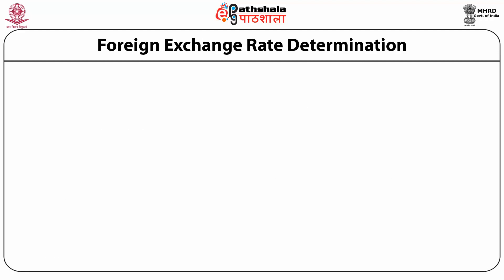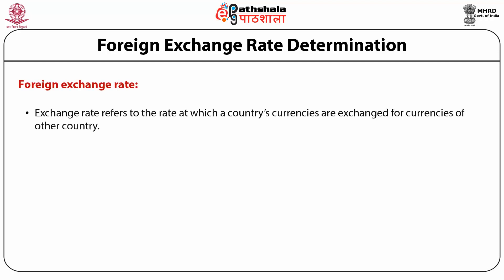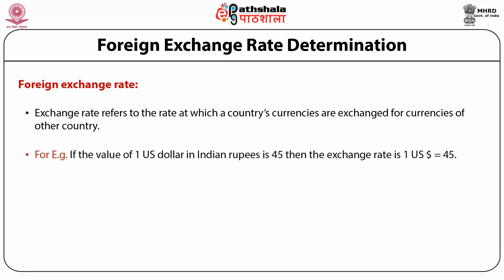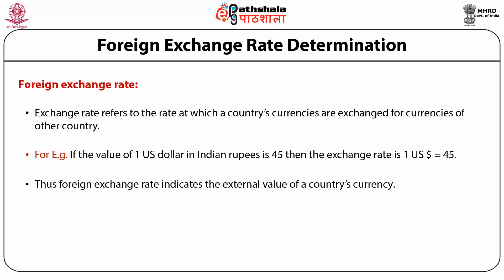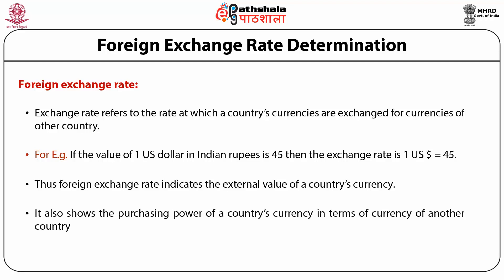Now, after understanding what is the foreign exchange market, let us understand foreign exchange rate and how it is determined. Foreign exchange rate refers to the rate at which a country's currency is exchanged for currencies of another country. In other words, it is the price of one currency in terms of another currency. For example, if the value of one US dollar in Indian rupees is 45, then the exchange rate of one US dollar is 45 Indian rupees. Thus, foreign exchange rate indicates the external value of a country's currency and allows comparison of purchasing power across countries.